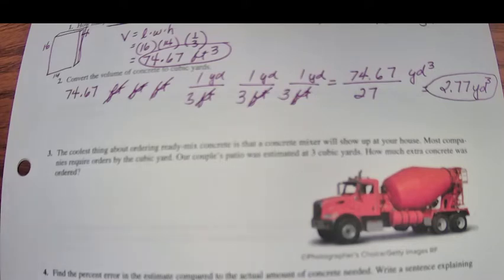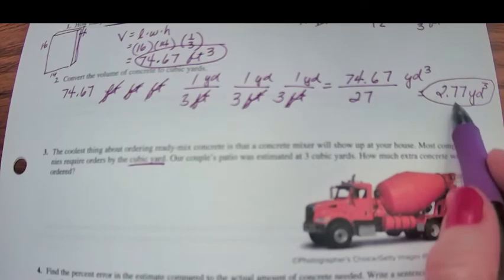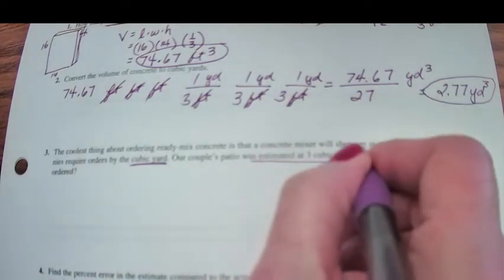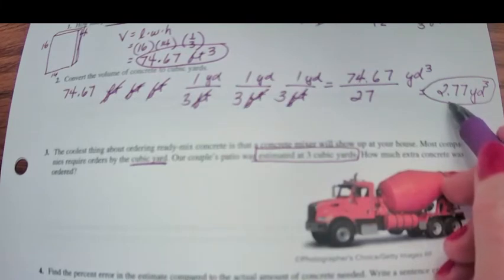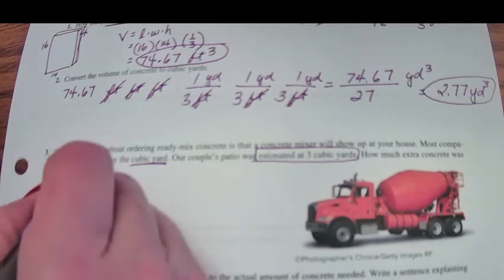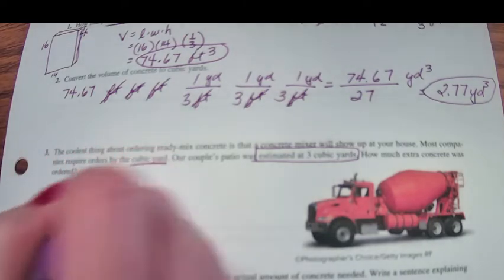Now here it says the coolest thing about ordering ready-mix concrete is that the concrete mixer is going to show up right at your house. But most companies require orders by the cubic yard. 2.77 cubic yards, we can't ask them for 2.77, that exact amount. So we're going to change this estimate to 3 cubic yards. We want to make sure that this concrete mixer brings enough concrete.